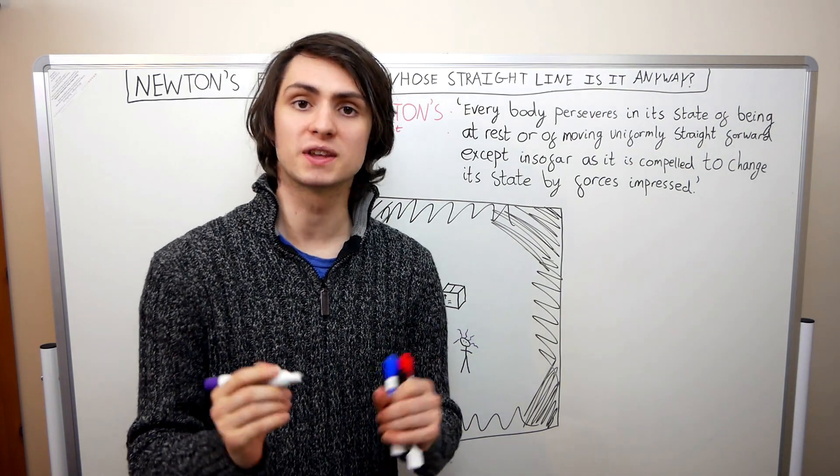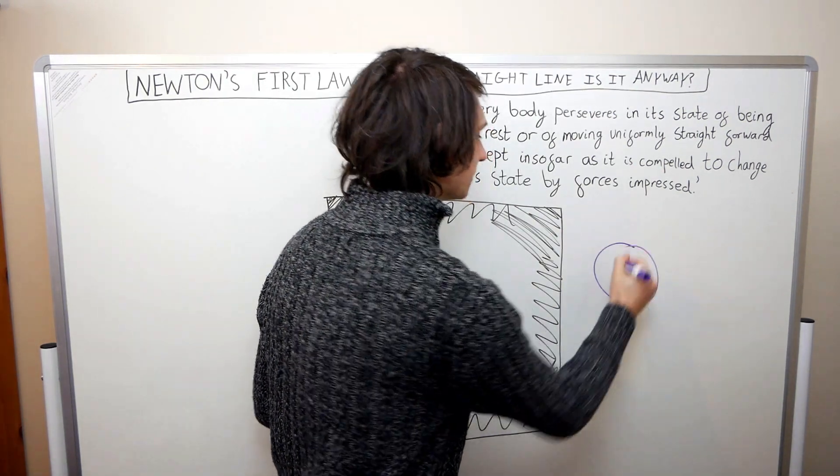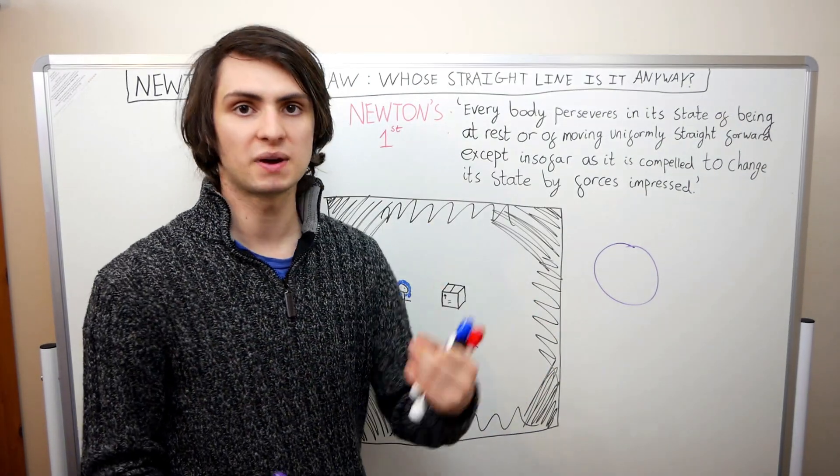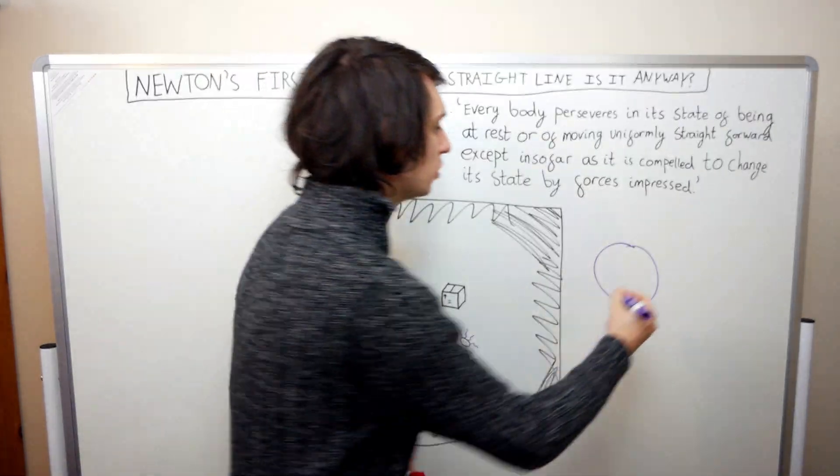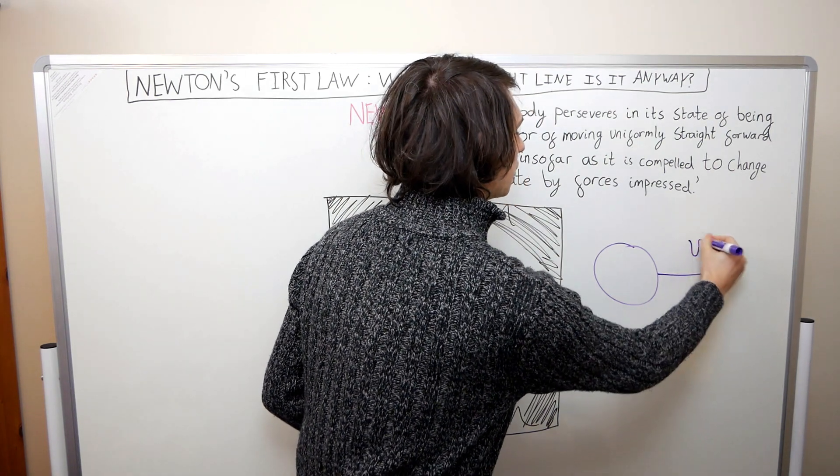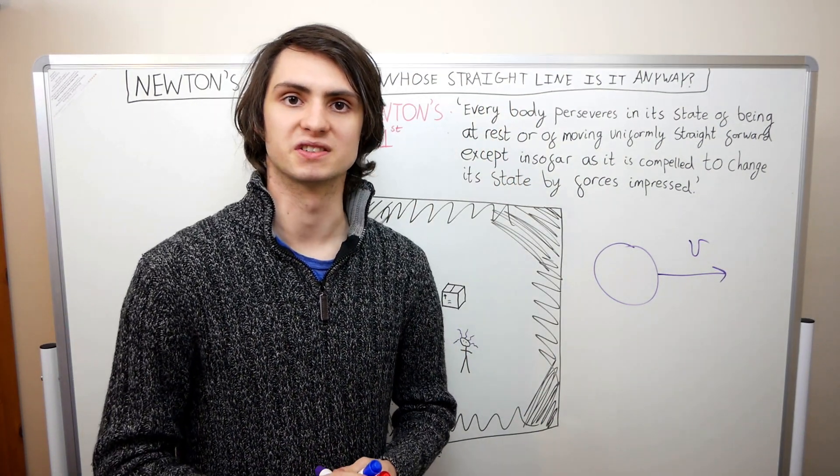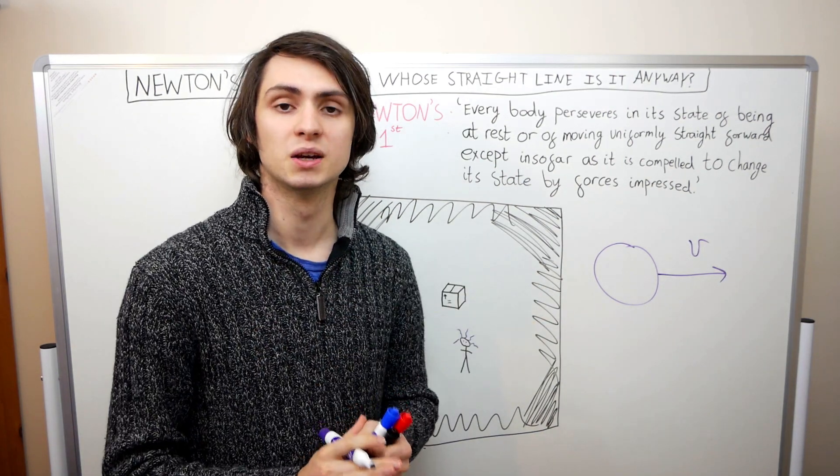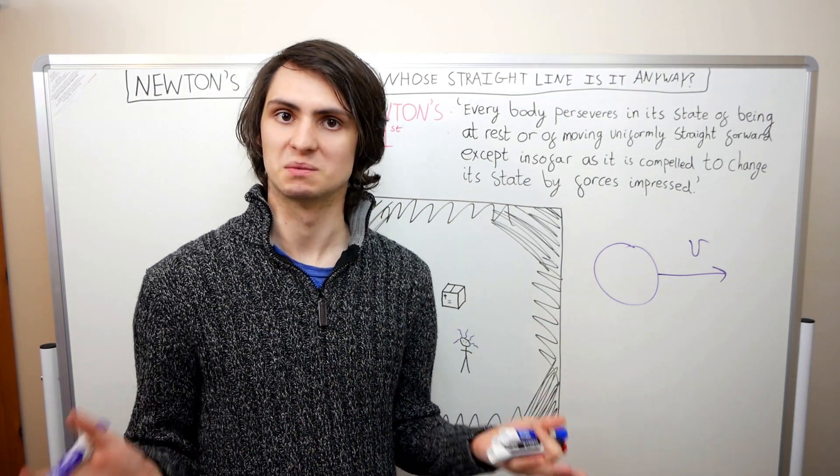In more modern day English, all this means is that if we have some object which isn't being acted on by any external forces, then we should expect to see it at rest or moving in a straight line with a constant velocity. This all seems rather straightforward, doesn't it? If you have a force-free body, then we should expect to see it moving in a straight line with a constant speed. That seems reasonable.